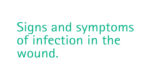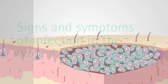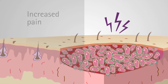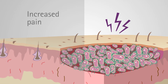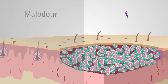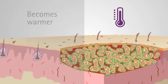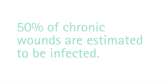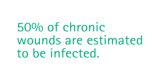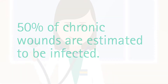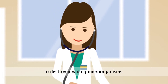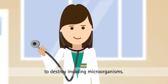Here is a list of signs and symptoms that indicate an infection in the wound: wound healing takes longer than expected, increased pain, malodour, wound becomes warmer, and an increase in the amount of slough present in the wound. 50% of chronic wounds are estimated to be infected, and an HCP intervention is generally required to destroy the invading microorganisms.